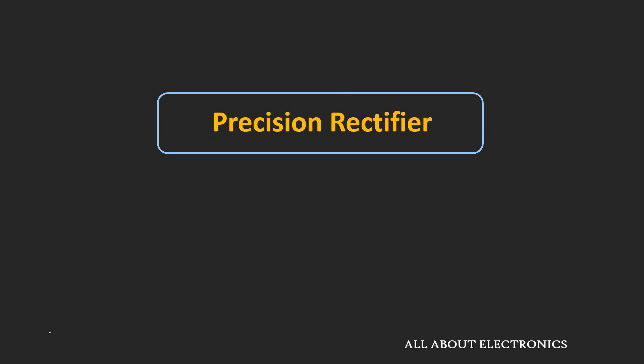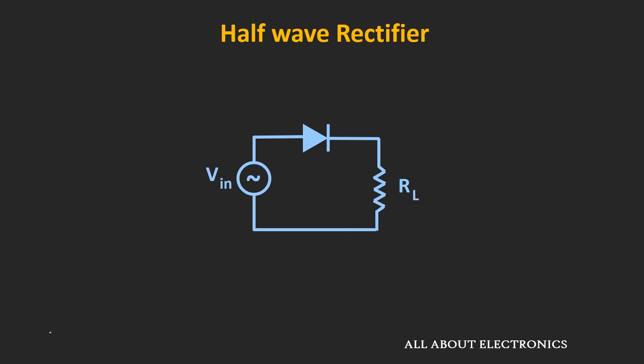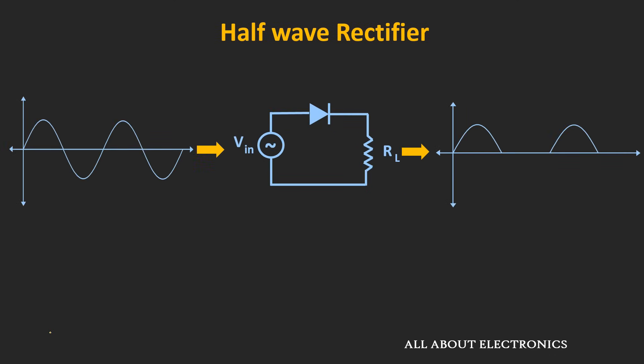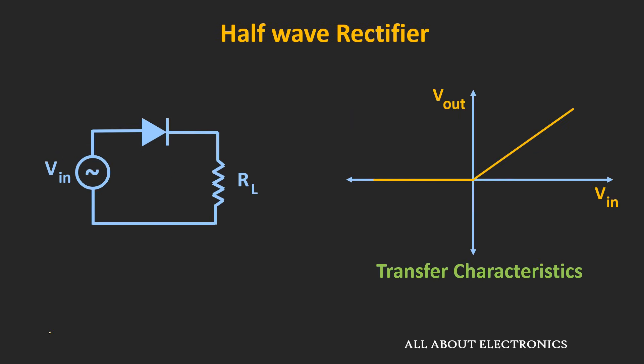The first question which comes to mind is: what is a precision rectifier, and how is it different from the normal rectifier circuit? In the previous videos, we learned about the half-wave rectifier circuit. If we assume the diode as an ideal diode, whenever the sine wave is applied, at the output we will get only positive half-cycles. For the ideal half-wave rectifier, the transfer characteristic will look like this.